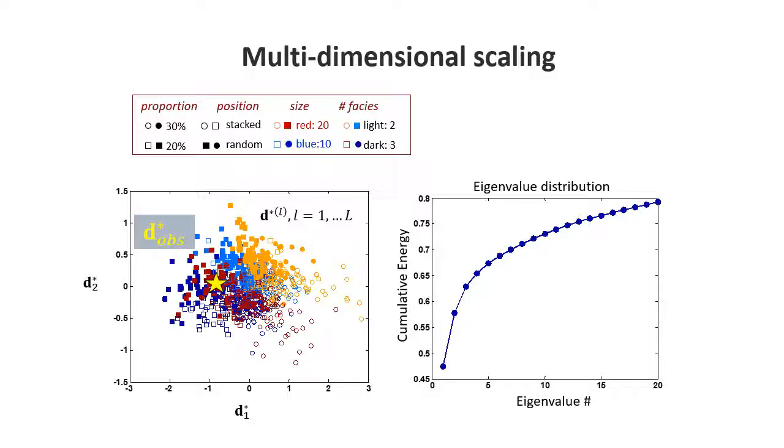For the previous analysis, what I've obtained is basically a table of L times L that measures the difference between any of the two model realizations. And also, actually, it's a table of L plus one times L plus one, because it also includes the actual observations.